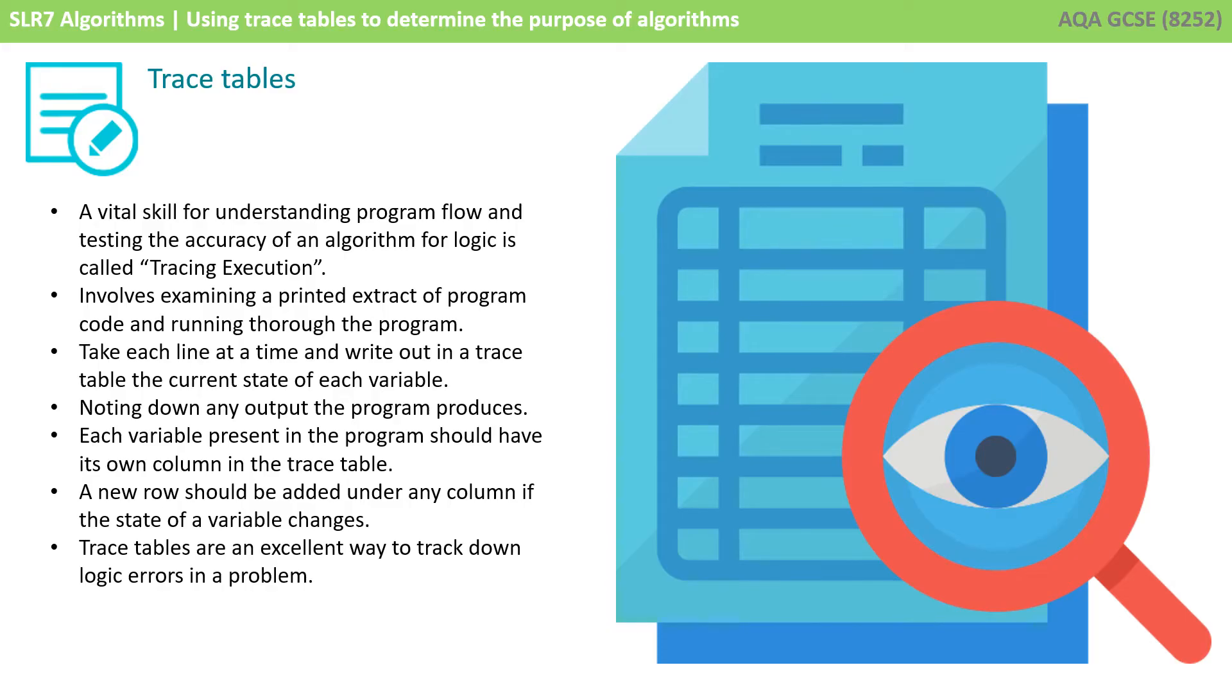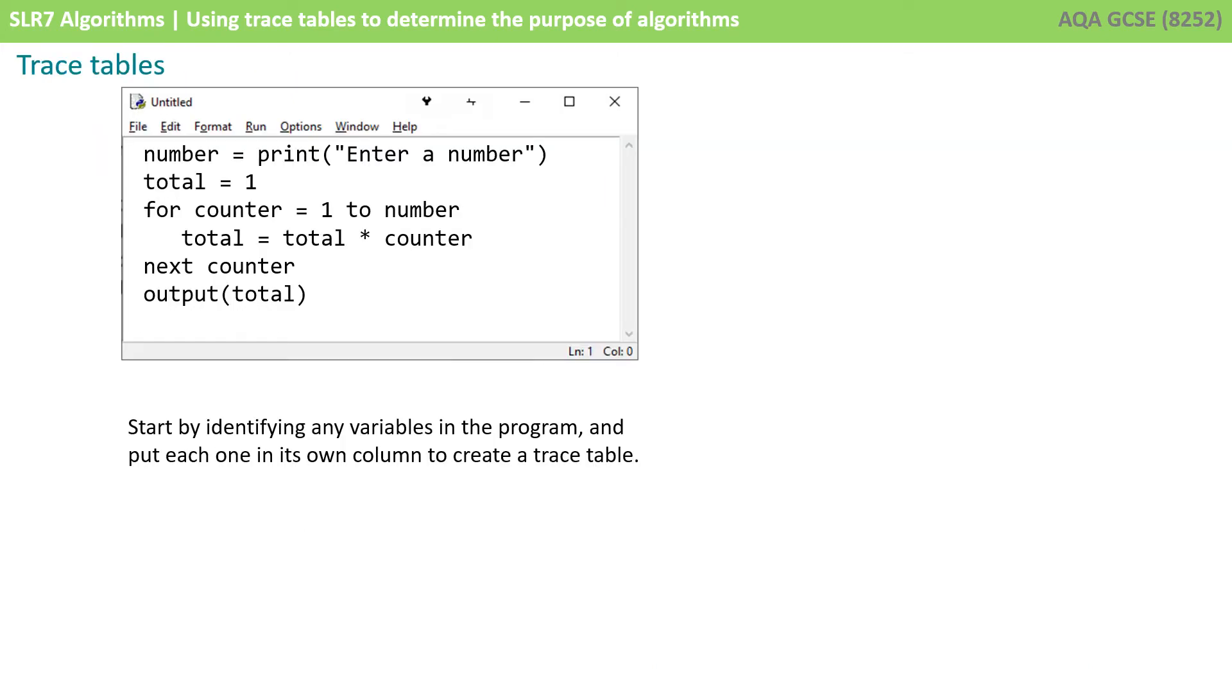This can all sound a little abstract, so let's work through a simple program and use a trace table to figure out what it's doing. First, we start by identifying any variables in the program and we put each one into its own column to create our trace table.